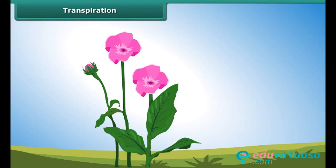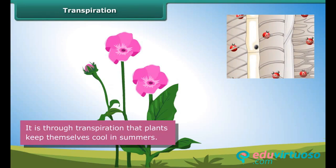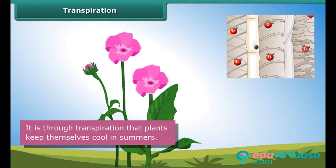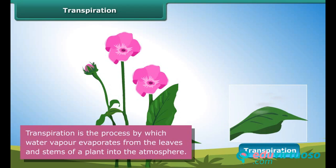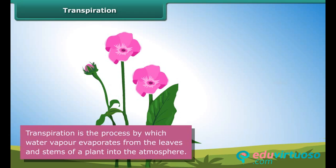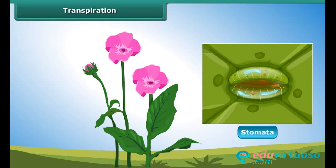An important function of the leaf is to keep the plant cool in summers. This is accomplished through transpiration. Transpiration is the process by which water vapor evaporates from the leaves and stems of a plant into the atmosphere. Small pores called stomata on the underside of the leaves facilitate transpiration.